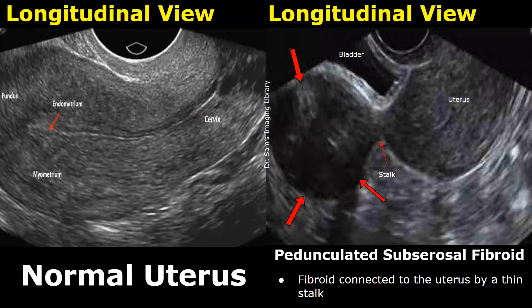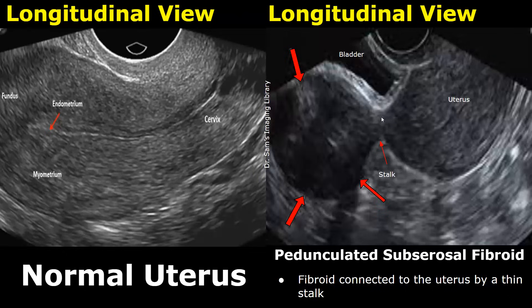Here is another case of pedunculated subserosal fibroid. We can see a fibroid growing outwards and it is connected to the uterus by a thin stalk.